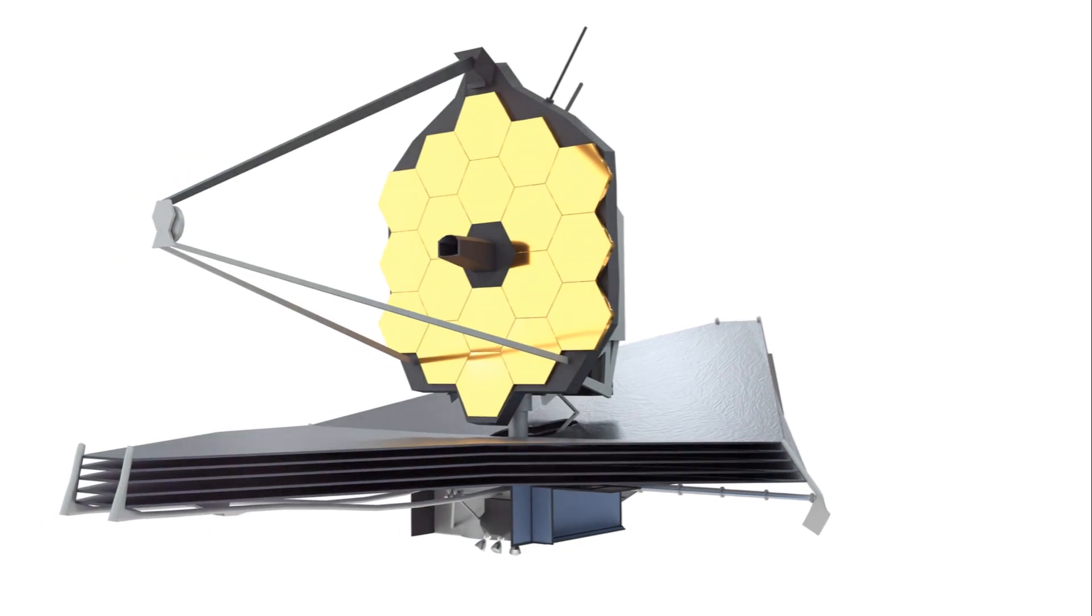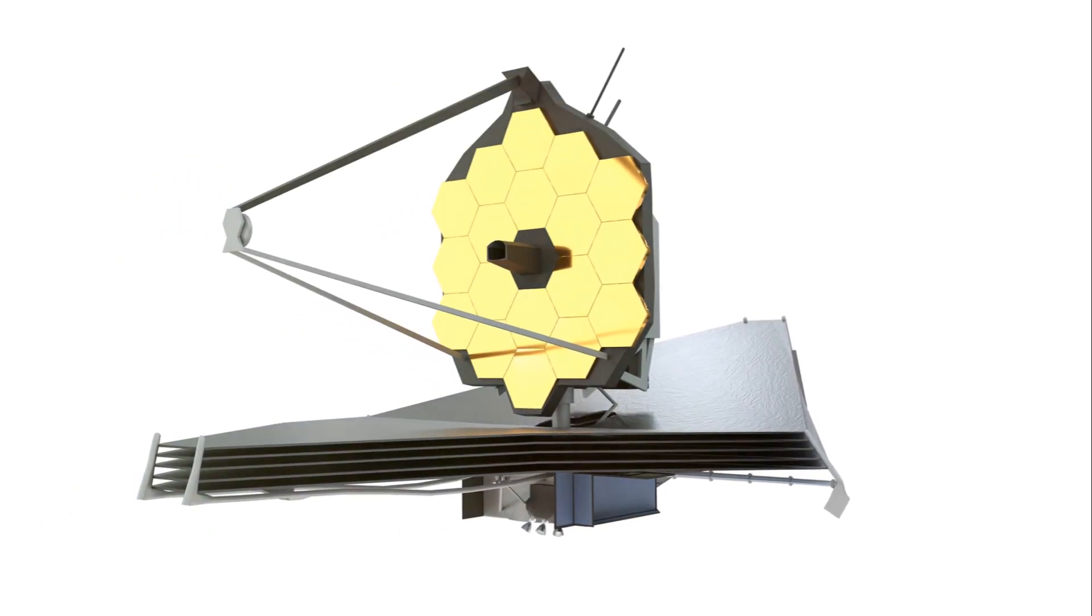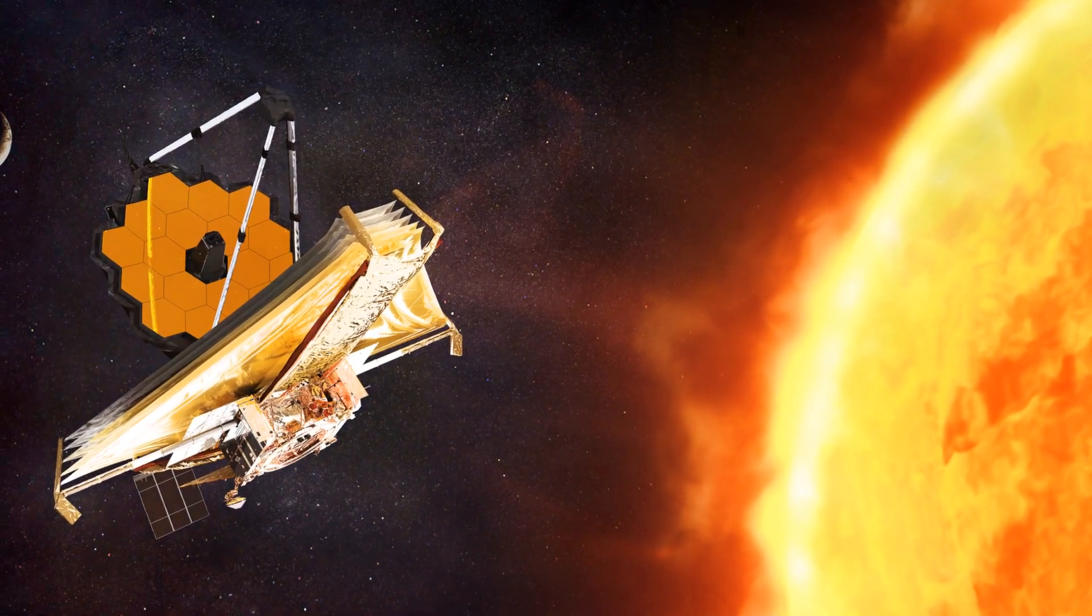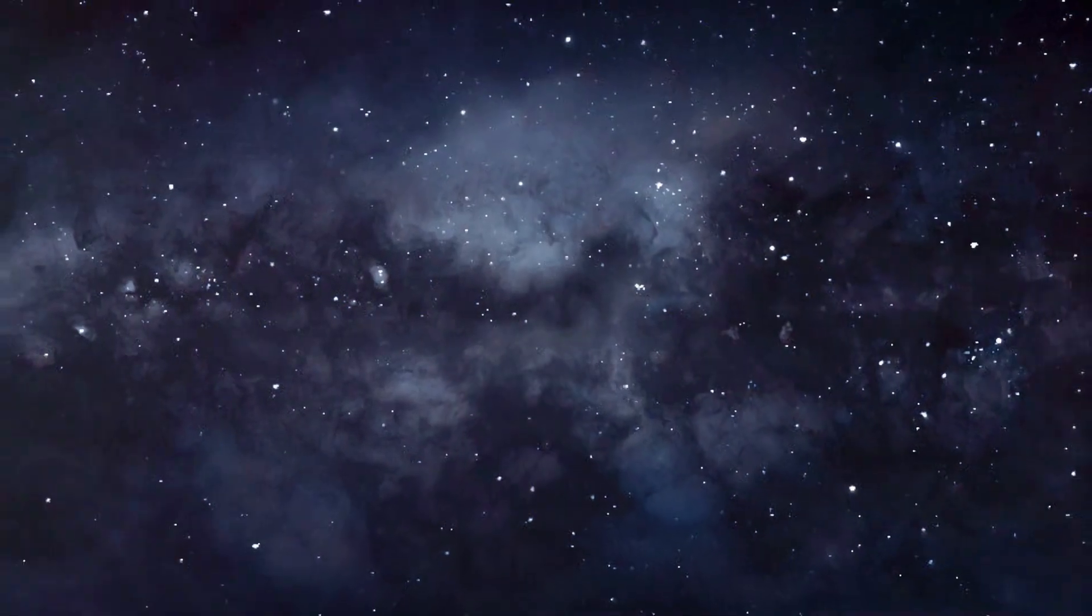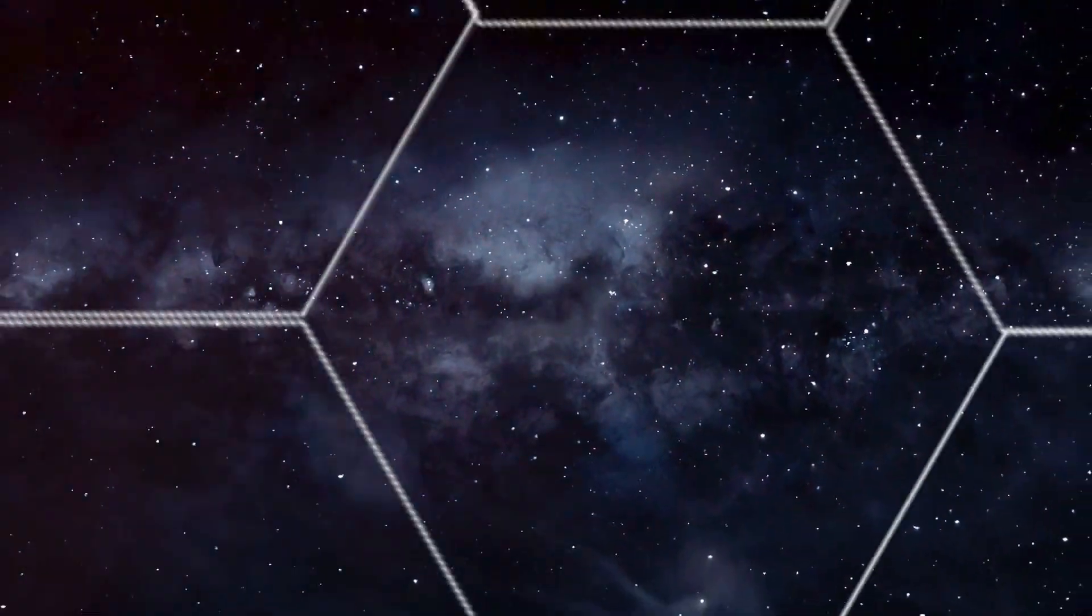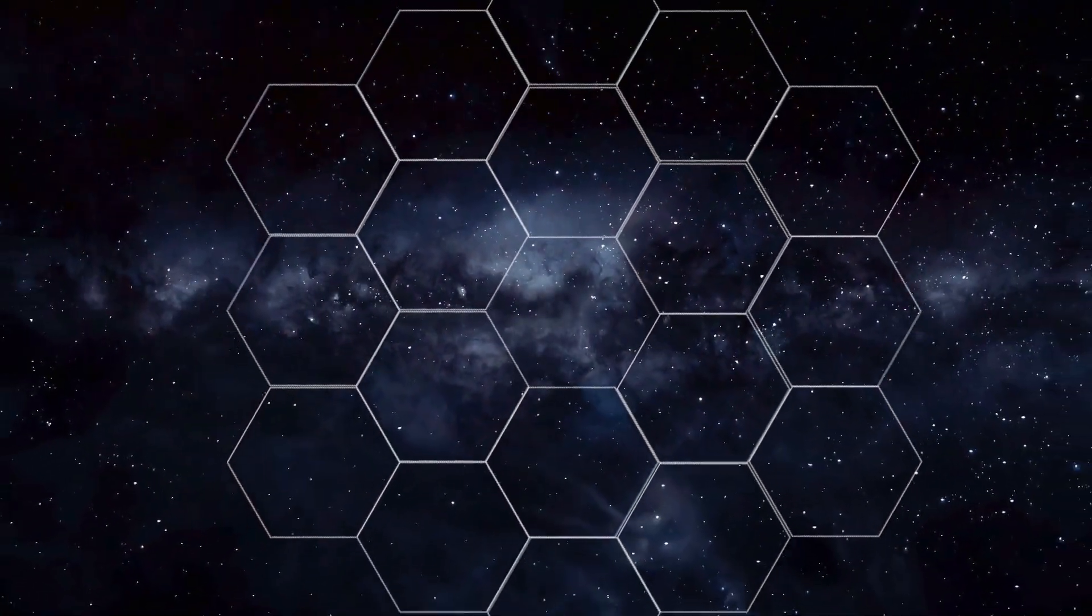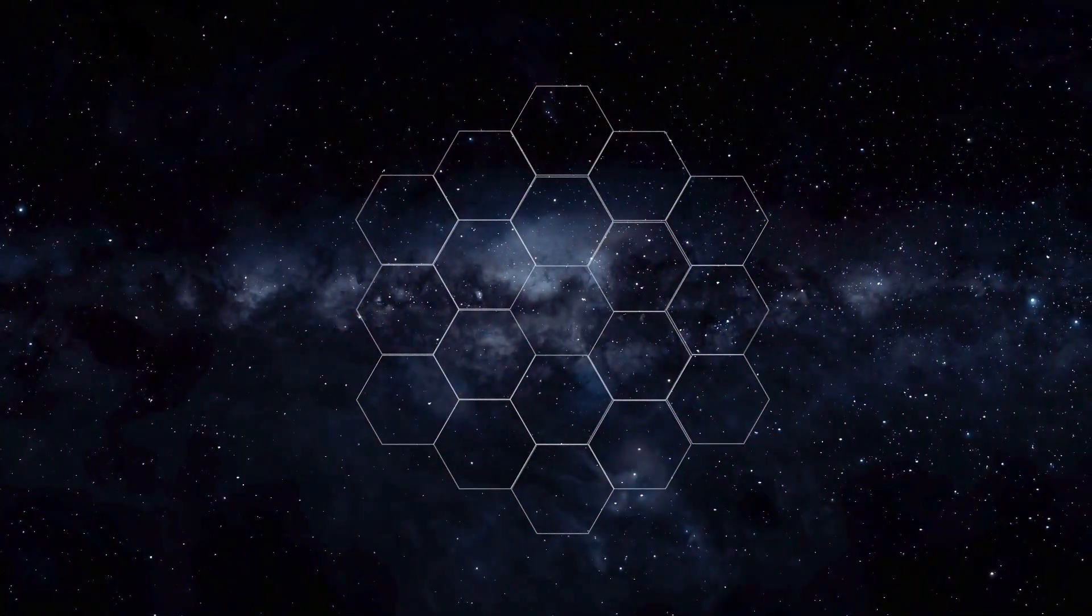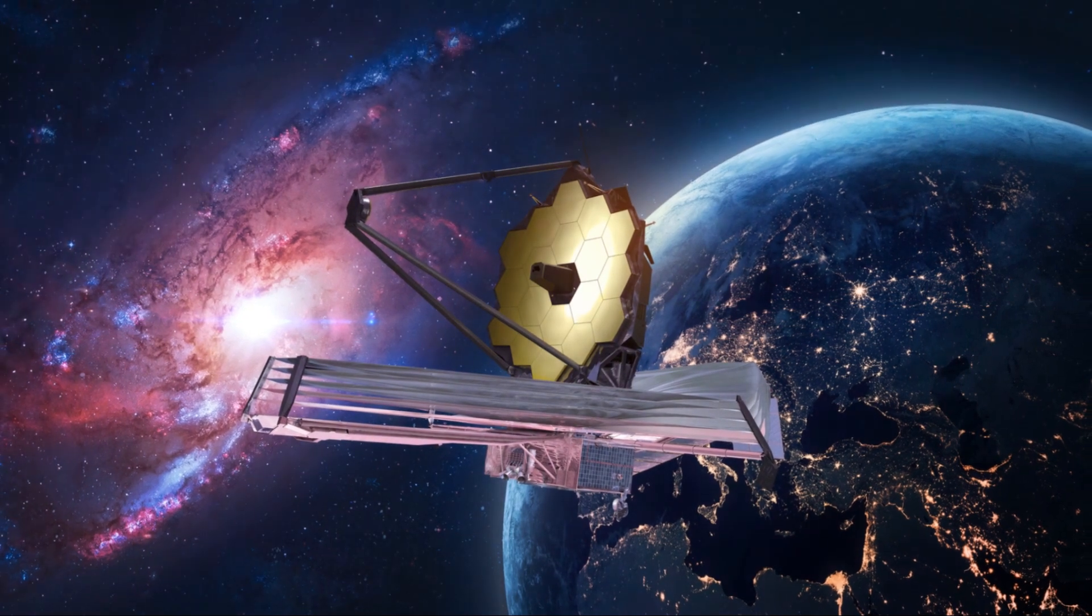But the journey wasn't over yet. Once the JWST reached the L2 point, it had to undergo a complex, automated process of unfolding. This was a critical and nail-biting phase of the mission. Over a period of two weeks the telescope unfolded piece by piece. First the solar panel and antennas, then the sunshield which is as large as a tennis court.